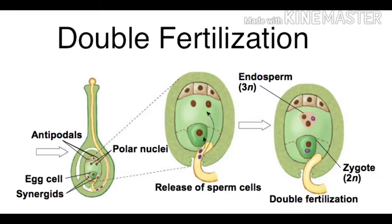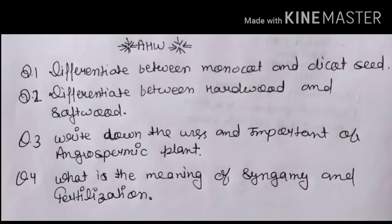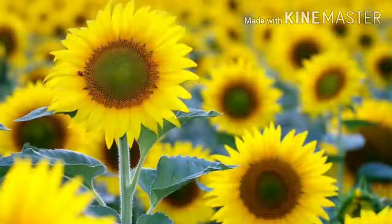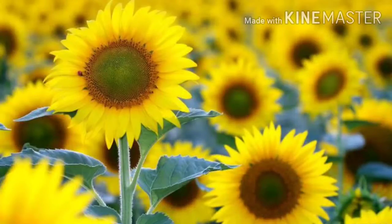In this picture you can easily understand about the double fertilization, in which an egg cell and the polar nuclei fuse with the sperm cell — pollen grains. Here is the homework portion: answer all these questions in your notebook along with the date, and if possible, draw the diagram of monocot and dicot seeds. In the next class, we will discuss more things related to angiospermic plants.